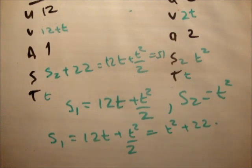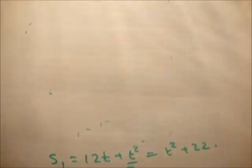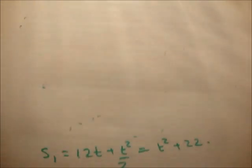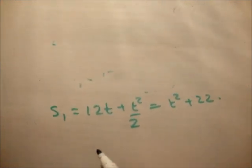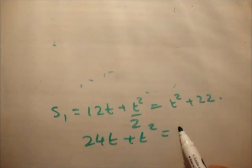S1 is equal to 12T plus T squared over 2 is equal to T squared plus 22. Remember, Gustav has travelled 22 metres less than Alberto. So I add 22 metres on and they have the same distances. And multiply by 2. So 24T plus T squared is equal to 2T squared plus 44.